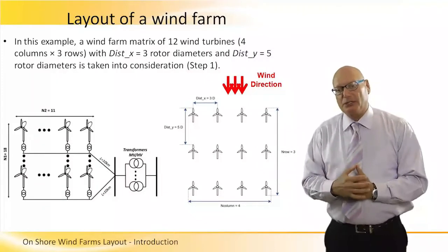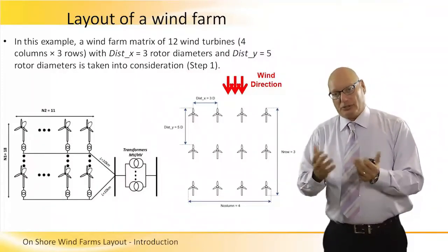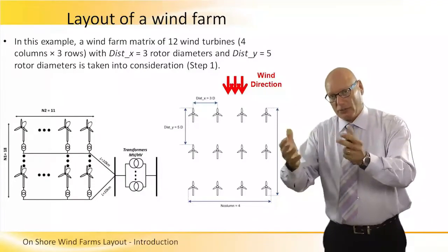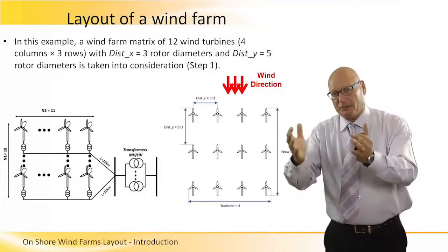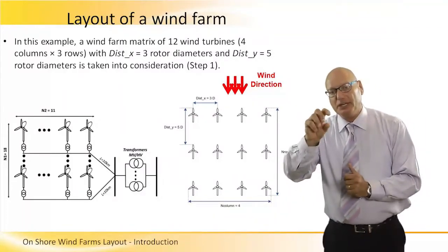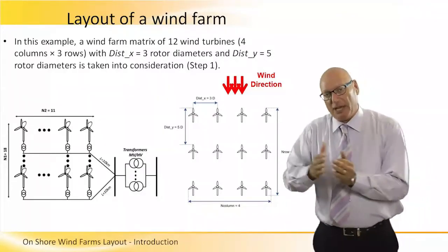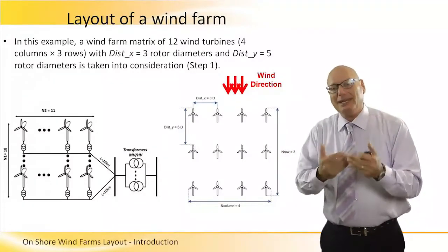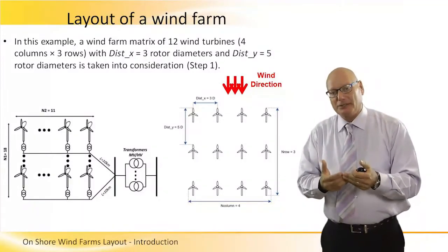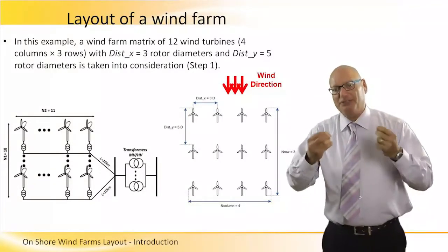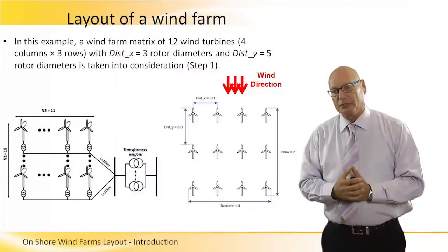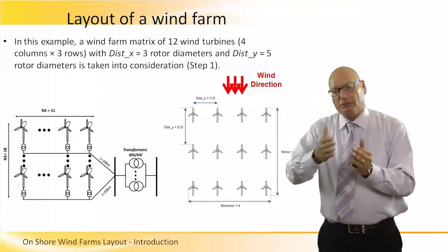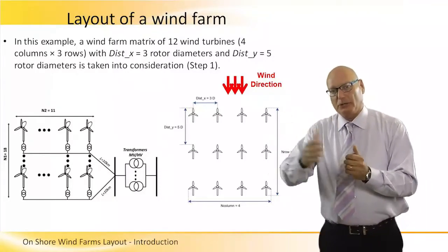On the right-hand side we see another configuration of a wind farm, which again can be offshore or onshore. The distance between each neighboring turbine should be at least five times the diameter of the rotor when going from row to row, and three diameters when going from turbine to turbine within the same row.